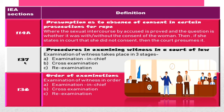Section 137 IEA talks about procedures for examining a witness in a court of law: examination-in-chief is done by the party's own attorney, cross-examination is done by the opposite attorney, and re-examination is done again by the party's own attorney to clear doubts raised during cross-examination. Whether they ask about examination-in-chief, cross-examination, or re-examination separately, the answer is Section 137. The order of examinations falls under Section 138.